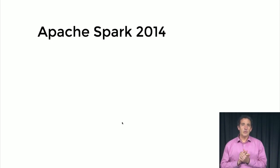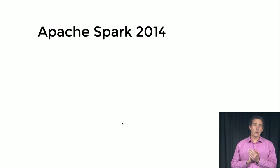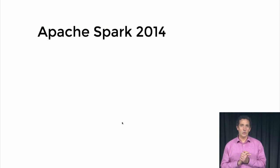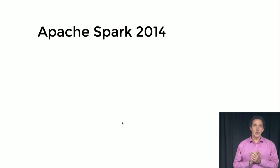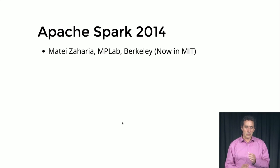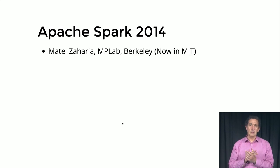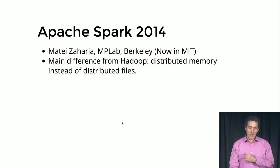Apache Spark is one of the later arrivals to this family of software, invented in 2014 by Matei Zaharia. The main difference from Hadoop is that it uses memory instead of disks to store the data, which allows it to be much faster in some aspects.